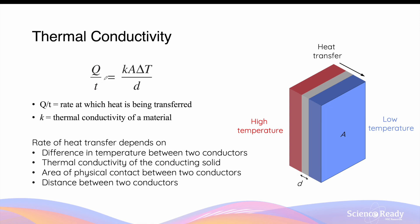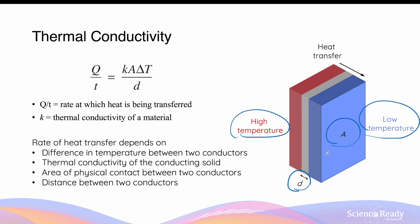The rate of heat transfer is directly proportional to the variables in the numerator — that is the thermal conductivity, the surface area of contact, and the difference in temperature. It is inversely proportional to the distance between the two conductors. So when we want to find out the rate at which heat is transferred via conduction, we need the area of contact, the distance between the conductors, and the temperature difference between them.